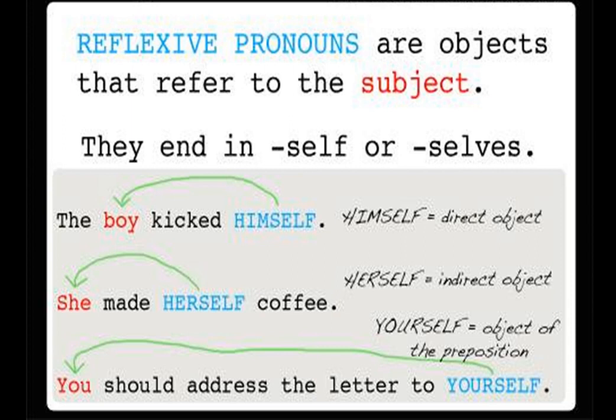The word ends with 'self'. 'Herself' is an indirect object form. For example: 'She made herself coffee' — 'herself' reflects back to 'she'. Another example: 'You should address the letter to yourself' — 'yourself' reflects back to 'you'. These are examples of reflexive pronouns.